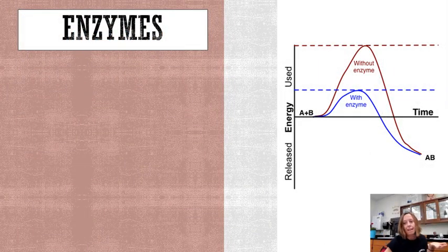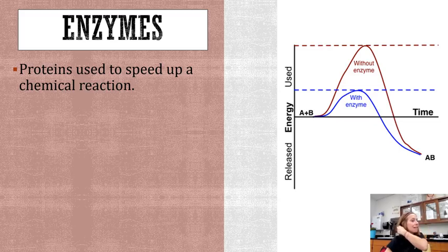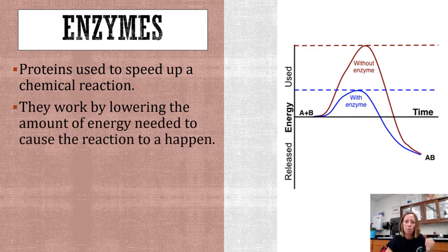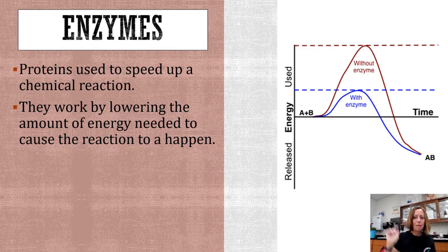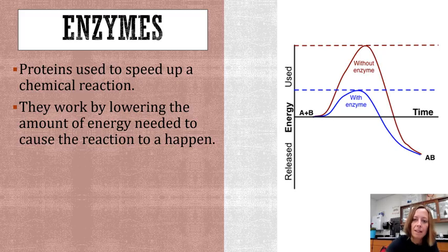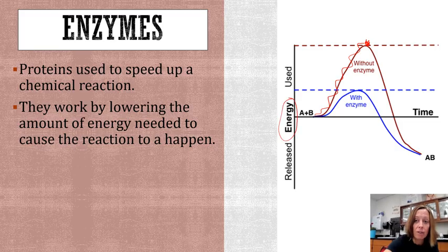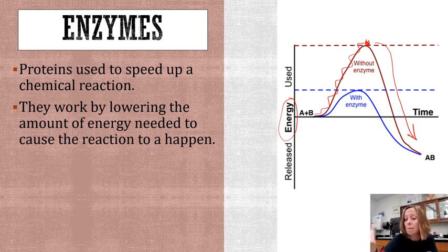The next type of protein is enzymes — proteins that your body makes that are used to speed up chemical reactions. They work by lowering the activation energy needed to make a reaction occur. Activation energy is the amount your body has to put in to make something happen — think of it as climbing up a hill. On this graph, without an enzyme, you have to get up to this high point, putting in that much energy to make a sugar breakdown or some kind of reaction happen.